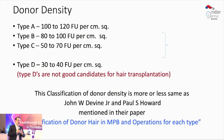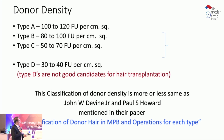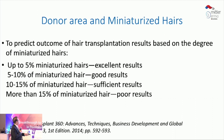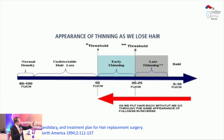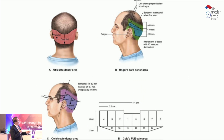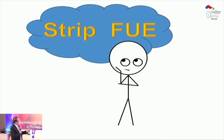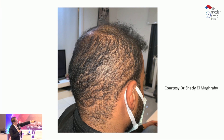Regarding donor density: anything less than 50 grafts per square centimeter is not ideal for surgery. Up to 5% miniaturization gives excellent results; at 10% and above you need to be very careful. Above 50% miniaturization is when visible thinning begins. You need to assess your donor area thoroughly before deciding to proceed with FUE.